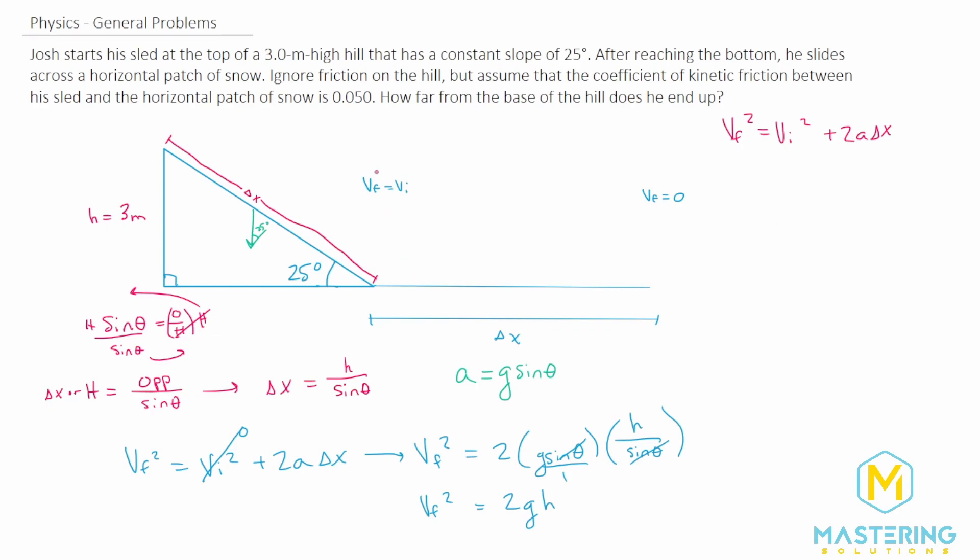We're looking at the final velocity now turns into the initial velocity. So our final velocity for this half is zero. So we have zero is equal to vi squared plus two a delta x.